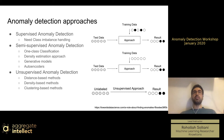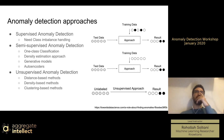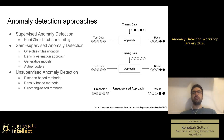In unsupervised anomaly detection, you don't know that much about your data — your data is not clean. Any sample could be an anomaly or not. That's why you can't just learn the distribution of data and be sure that whatever you're learning is actually normal. That's why they use different techniques like distance-based or density-based methods, where you're not sure what is anomaly and what is not in your training data.